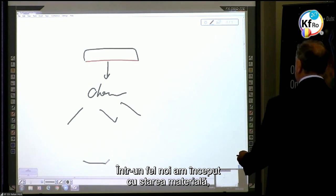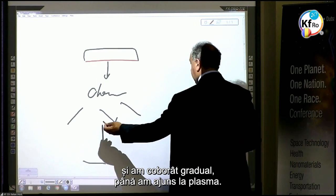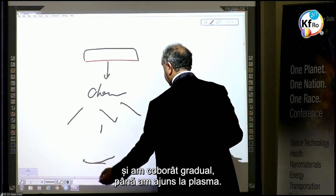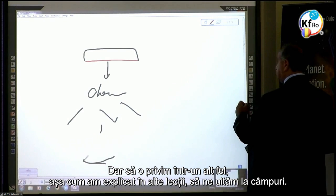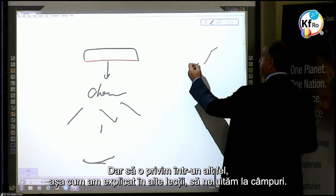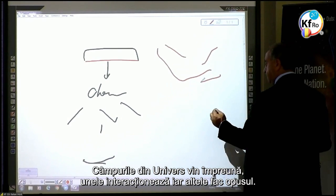In a way, we started with a matter state, but we came down gradually and got to plasma. But let's look at it the other way, as I've explained in other teachings. Let's look at the fields. The fields in the universe come together, some interact.